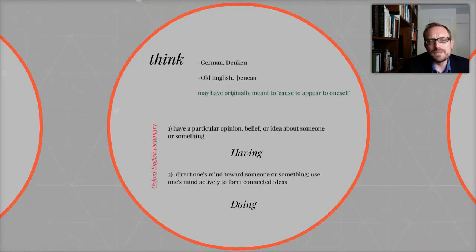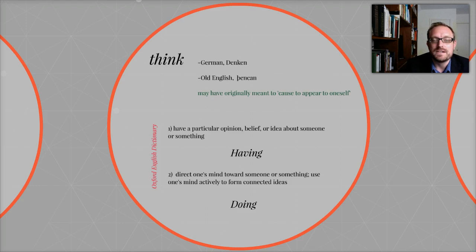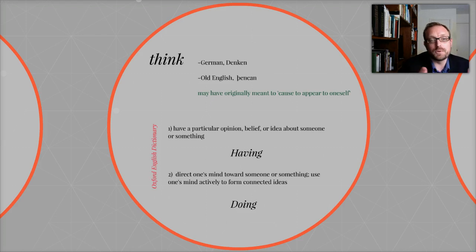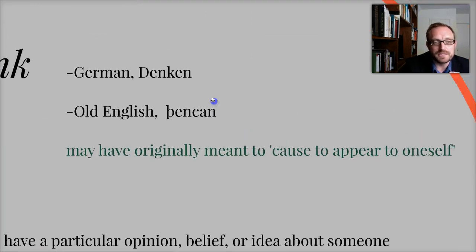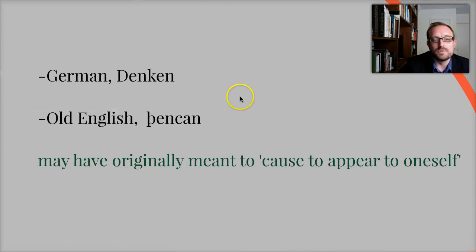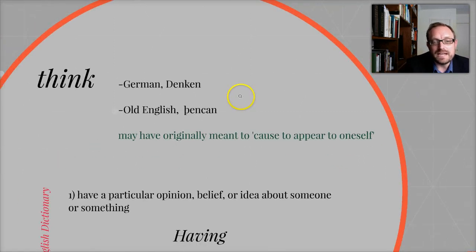Let's start off by thinking about thinking, beginning with some basic definitions. Let's start with the etymology of the word think — etymology means the word history. The English word think actually comes from the Old English "penken," which comes from the German "denken," which means to think.